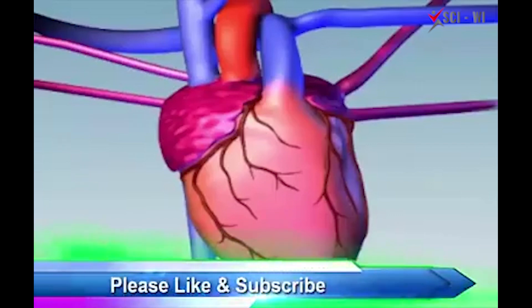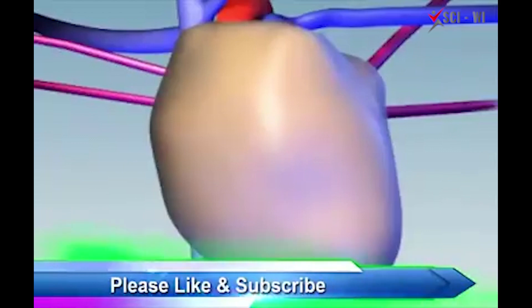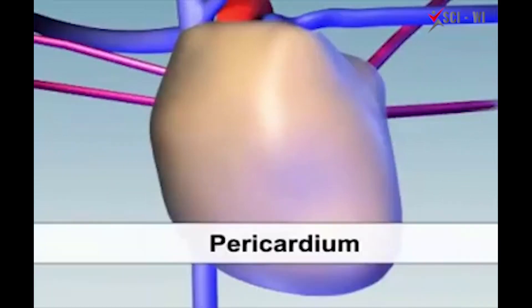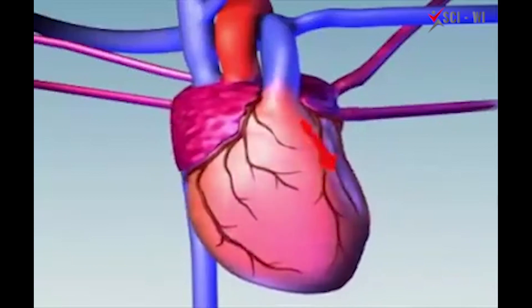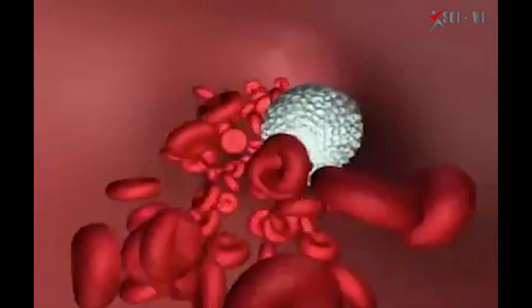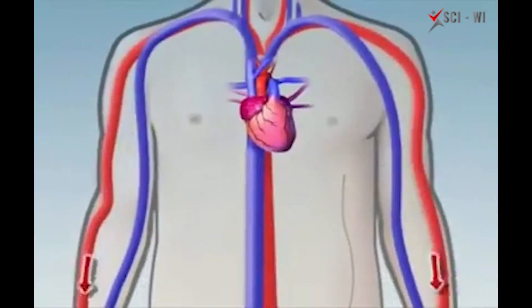The heart is a hollow muscular organ about the size of a fist. It is surrounded by a thin layer of tissue called the pericardium, or heart sac. The main job of the heart is to pump blood through a network of blood vessels. These vessels form a loop which starts at the heart, goes out through your body, and ends up back at the heart again.